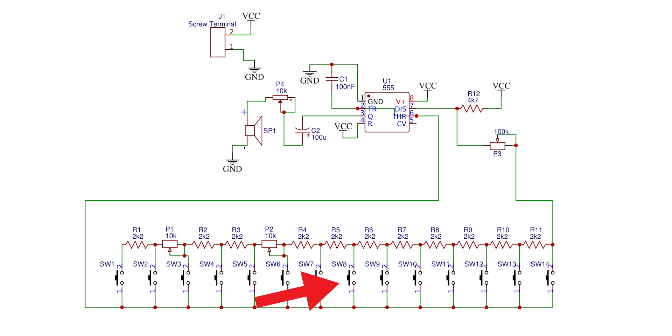Suppose switch 8 is pressed, then the resistors from R5 to R11 will add up in series and we will get PWM signal for that switch.